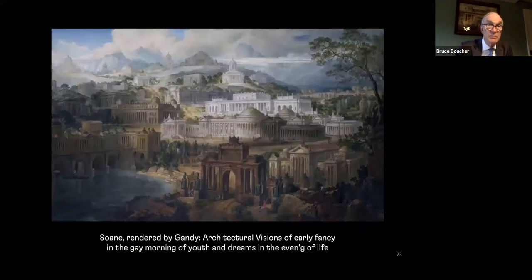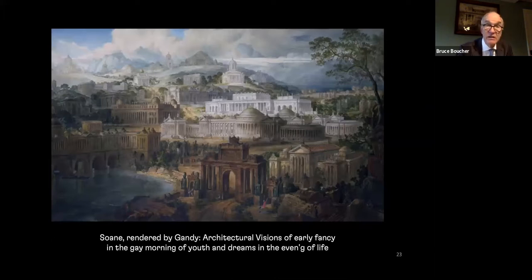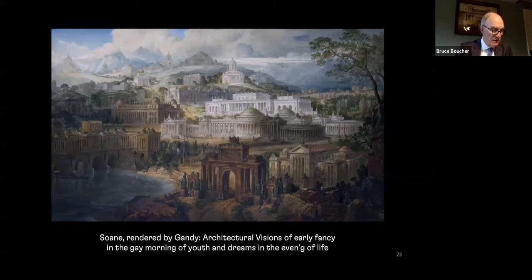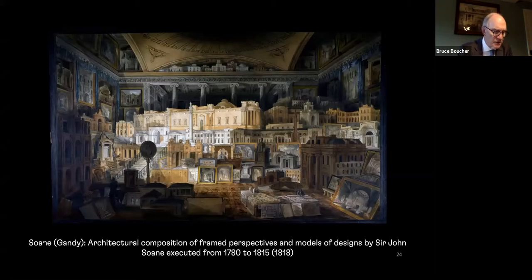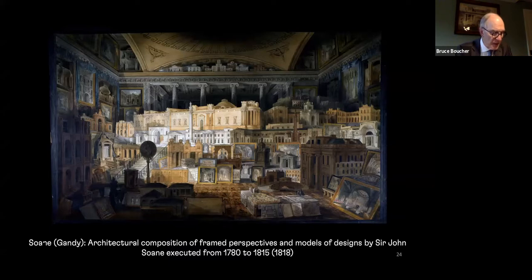The earliest of these works inside the picture plane are 'Architectural Visions of Early Fancy in the Gay Morning of Youth and Dreams in the Evening of Life' — a poetic title Soane gave this when it was exhibited in 1820 — and 'Public and Private Buildings Executed by Sir John Soane between 1780 and 1815,' exhibited in 1818 at the Royal Academy. These two works are juxtaposed on the outer panels of the three planes, and there's a pervasive sense of melancholy conveyed by that arrangement.